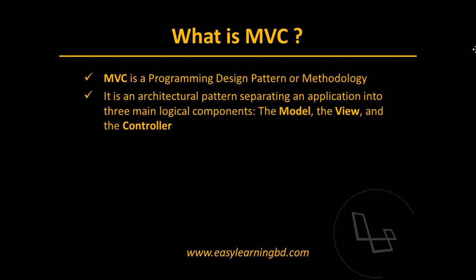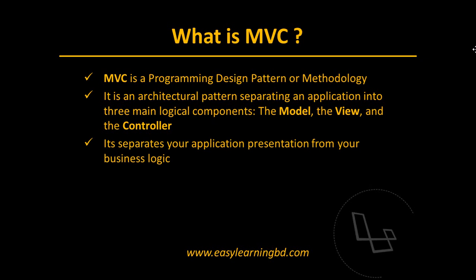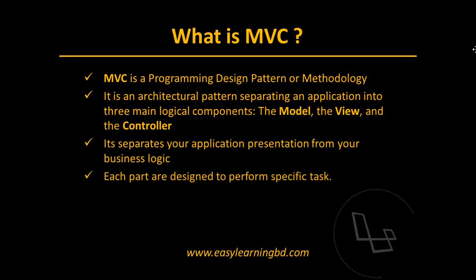In MVC you will get three components: M is for the Model, V is for the View, and C is for the Controller. Every component of each part is designed to perform a specific task.